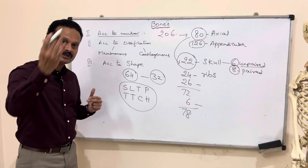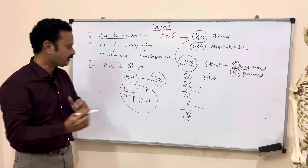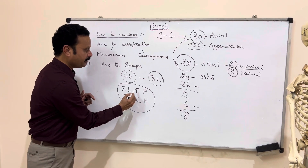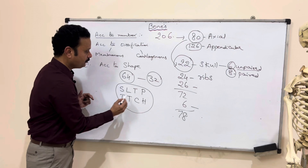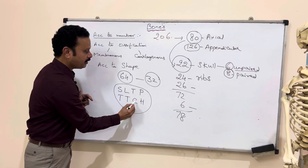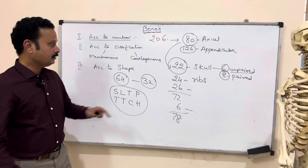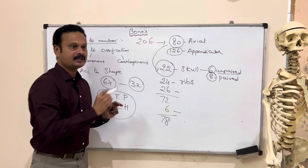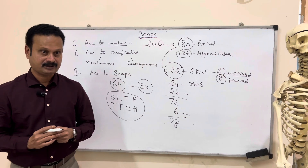So likewise, in the upper limb the bones are 32 on either side, making 64 total.